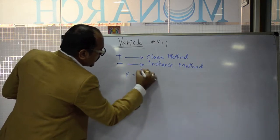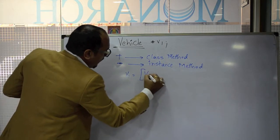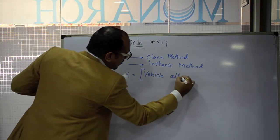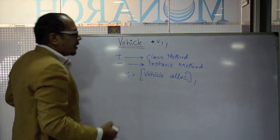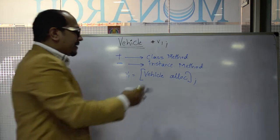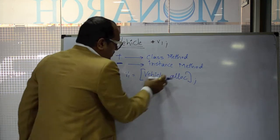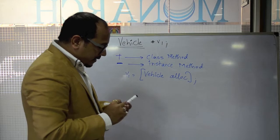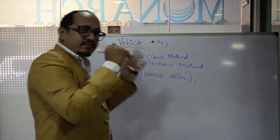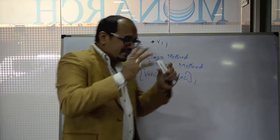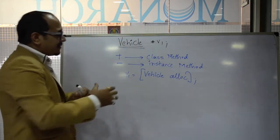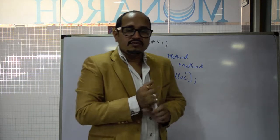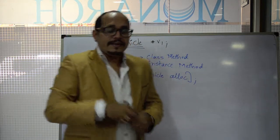If I want to create v1, I will write the code this way: v1 equal to vehicle alloc. Now, alloc is a class method because its receiver is a class object. alloc is declared in NSObject.